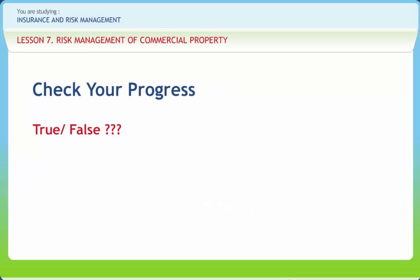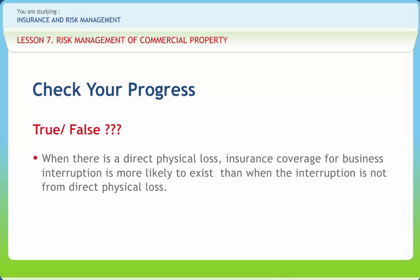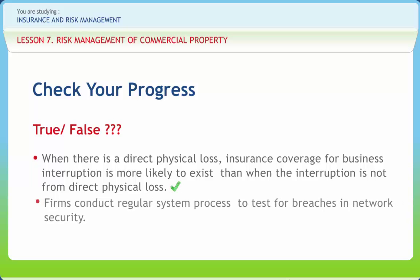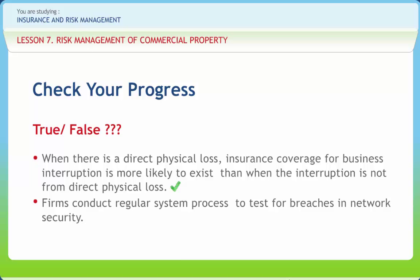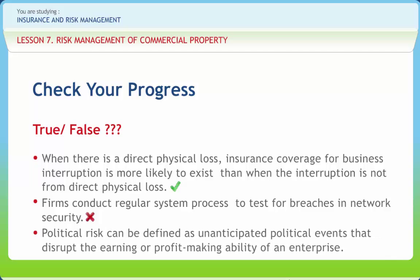Let us check if we have understood the various concepts discussed in this lesson. When there is a direct physical loss, insurance coverage for business interruption is more likely to exist than when the interruption is not from direct physical loss — Right. Firms conduct regular system audits to test for breaches in network security — the statement about 'regular system process' is Wrong; it should be system audits. Political risk can be defined as unanticipated political events that disrupt the earning or profit-making ability of an enterprise — Right.